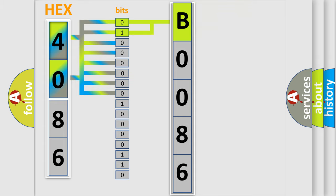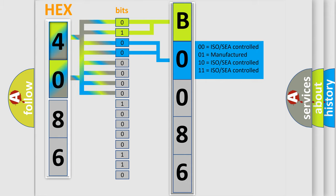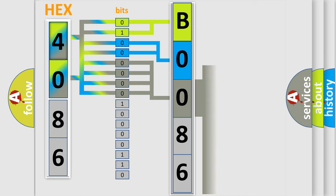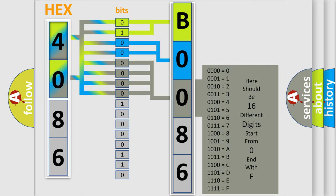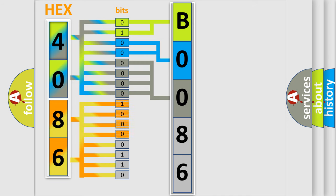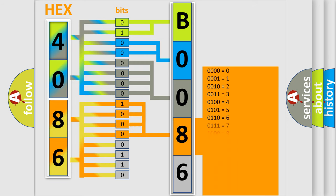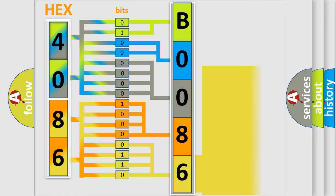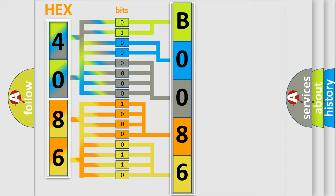The next two bits determine the second character. The last four bits of the first byte define the third character of the code. The second byte is composed of a combination of eight bits. The first four bits determine the fourth character of the code, and the combination of the last four bits defines the fifth character. A single byte conceals 256 possible combinations.